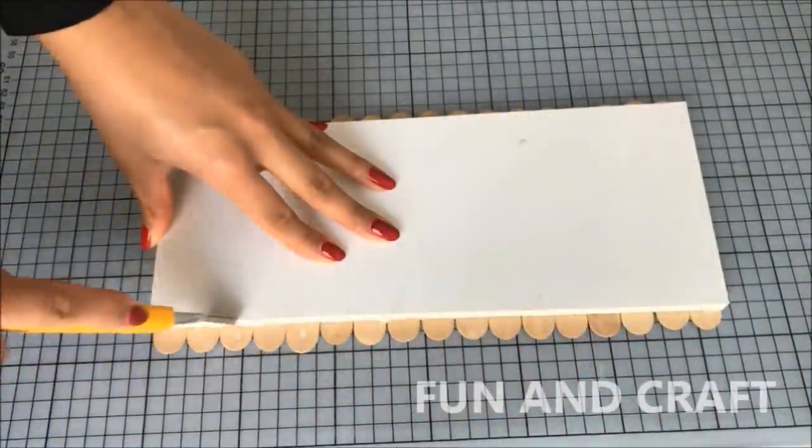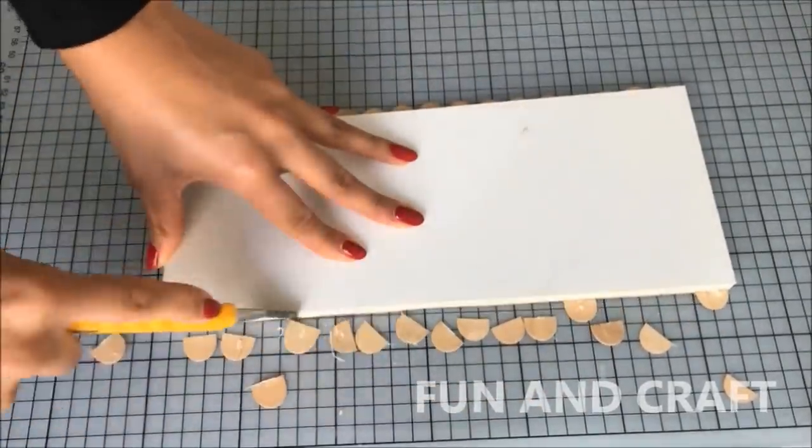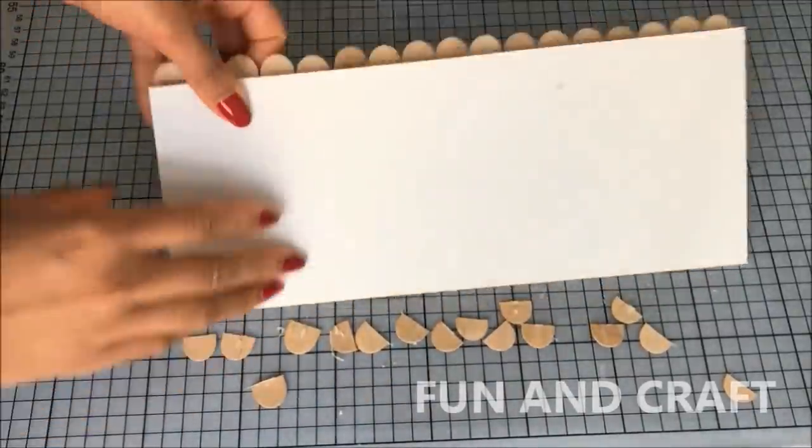Turn it around and cut off the round edges. In this case I find it easier to use a craft knife instead of scissors because it's much quicker. Repeat on the other side and don't forget to cover the edge.